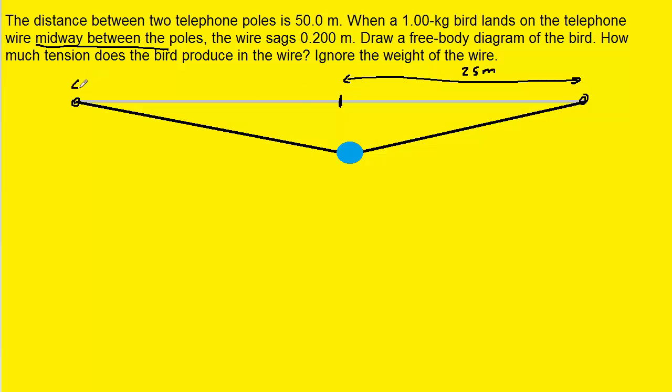On the other side the same thing, so the distance between the pole and the center here is again going to be 25 meters. We were also told that the wire sags by 0.2 meters, so from here to here is going to be 0.2 meters.